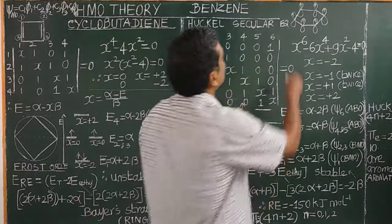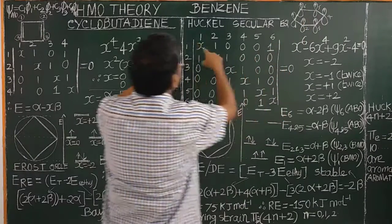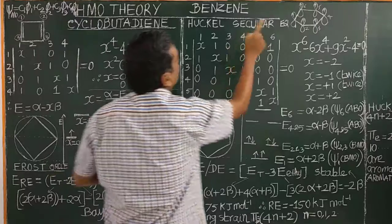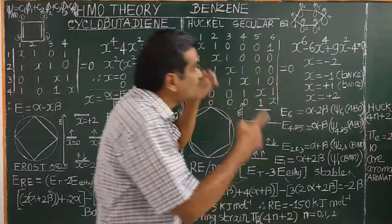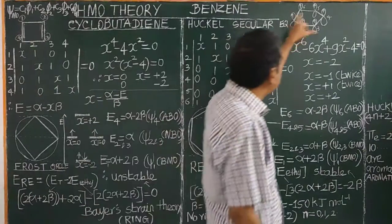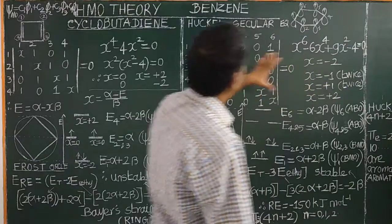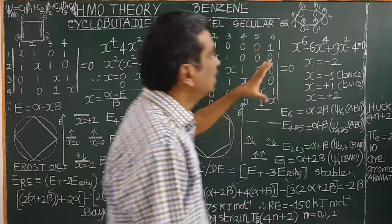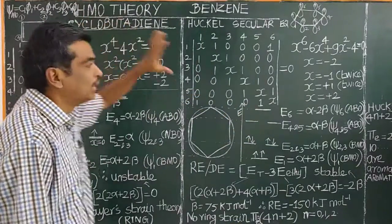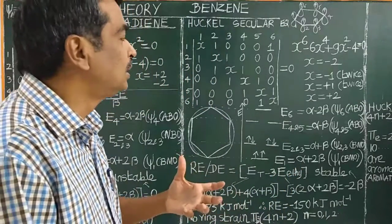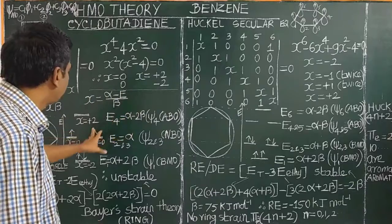Now for benzene, with 6 carbon atoms, the diagonal elements are x, and adjacent elements (1 and 2, 2 and 3, etc.) are 1. Since benzene is a cyclic compound, 1 and 6 are also adjacent, so their element equals 1 — unlike a linear molecule where 1 and 6 are not neighbors. You can write a simple computer program in C, C++, or any language to calculate the C1, C2, C3, C4 values.